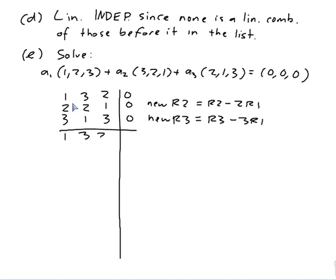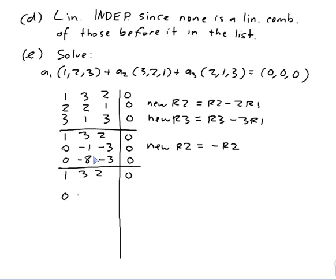So I haven't changed row 1. 0, minus 1, minus 3, 0. 0, minus 8, minus 3, 0. Next I would like an identity matrix column here with a 1 here. So I will multiply row 2 by minus 1. So my new row 2 is minus my old row 2. Haven't changed row 1. Haven't changed row 3. Multiply this one by minus 1.